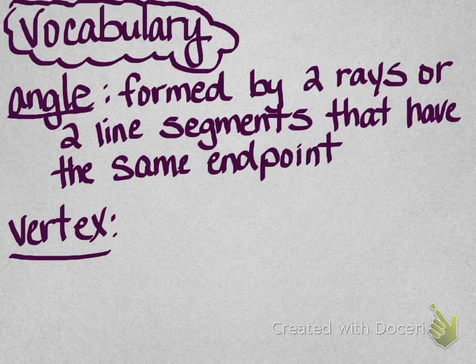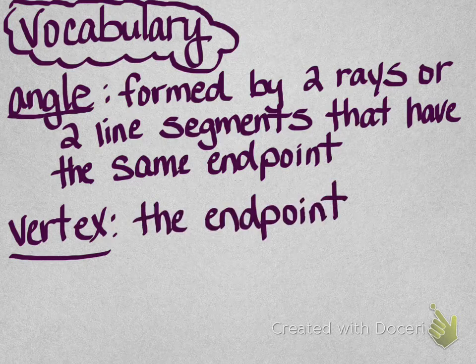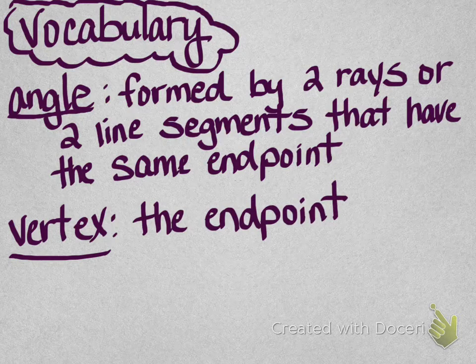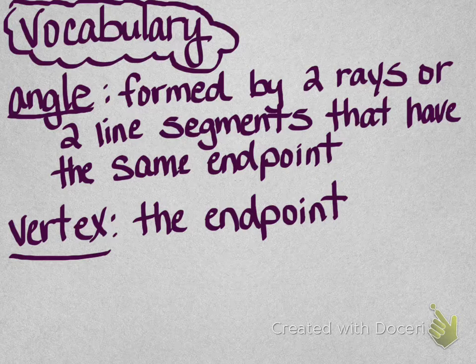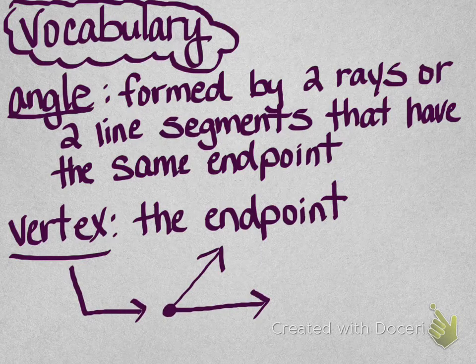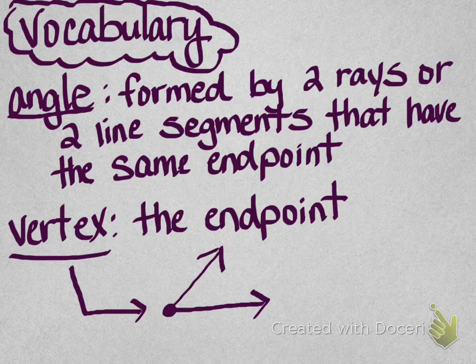Then we have vertex. Vertex is the end point where those two rays come together, and here's a picture pointing to the vertex of that particular angle.